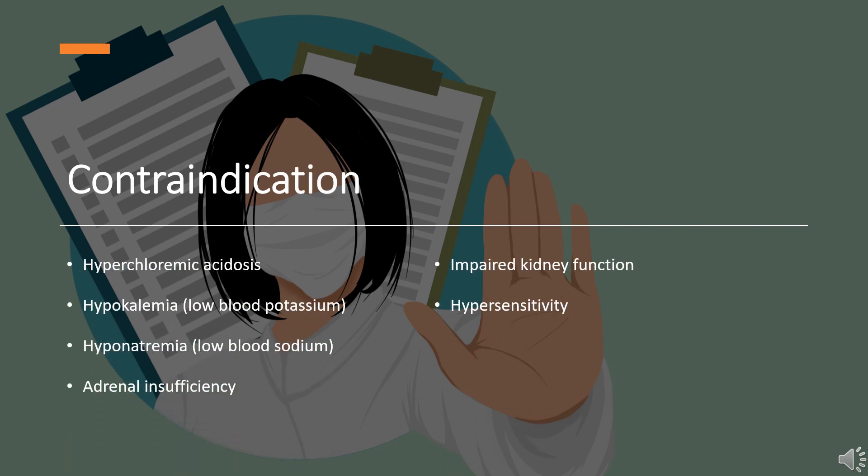Contraindications include: hyperchloremic acidosis, hypokalemia (low blood potassium), hyponatremia (low blood sodium), adrenal insufficiency, impaired kidney function, hypersensitivity to acetazolamide or other sulfonamides, and marked liver disease or impairment of liver function including cirrhosis, because of the risk of developing hepatic encephalopathy, as acetazolamide decreases ammonia clearance.